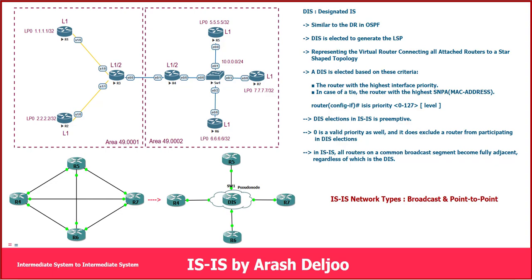Look at this scenario. Between router one and router three, and also router two and router three, we have two serial links. This means between R1-R3 and R2-R3 we are using point-to-point network types, as seen in previous videos. But look at the right part of the scenario - in area 49.0002, we have router 4, router 5, router 6, and router 7 connected to one Ethernet switch with their Ethernet interfaces. This is the multi-access or broadcast network type in ISIS.